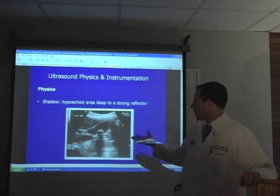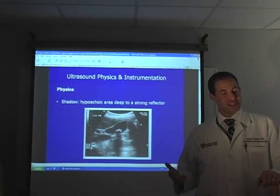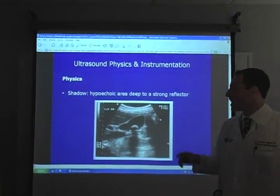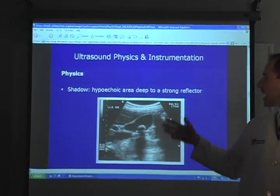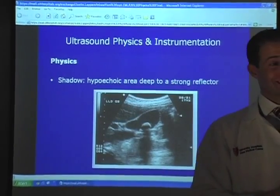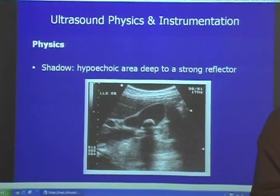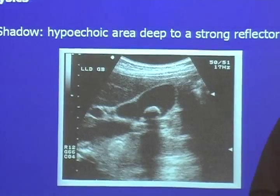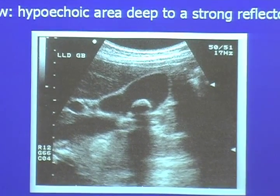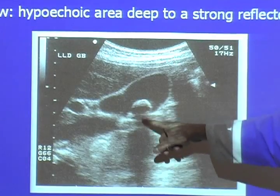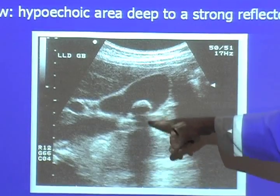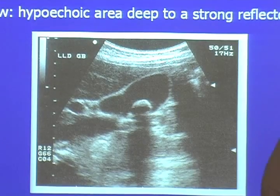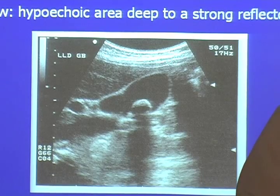Shadow is illustrated by a gallbladder and gallstone image. A gallstone produces a hypoechoic area deep to a strong reflector. This classically happens with dermoids and fibroids as well in gynecology, where a tissue density reflects enough sound that it creates an acoustic shadow underneath. It usually follows in a wave out from the gallstone — almost diagonal lines heading outward — showing that sound waves are being reflected back and not penetrating underneath, producing the hypoechoic shadow area.